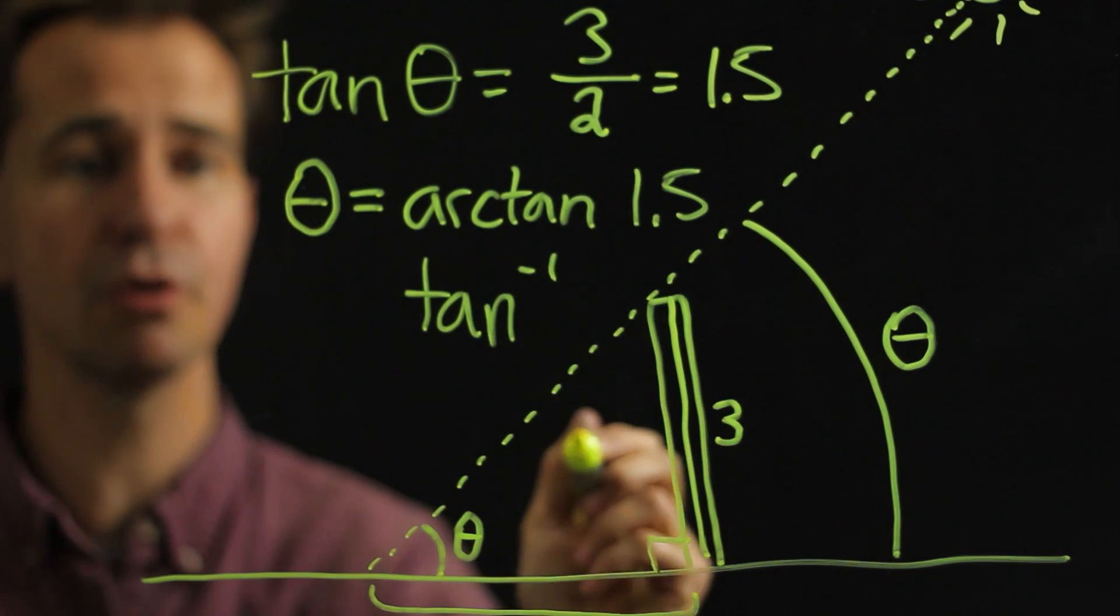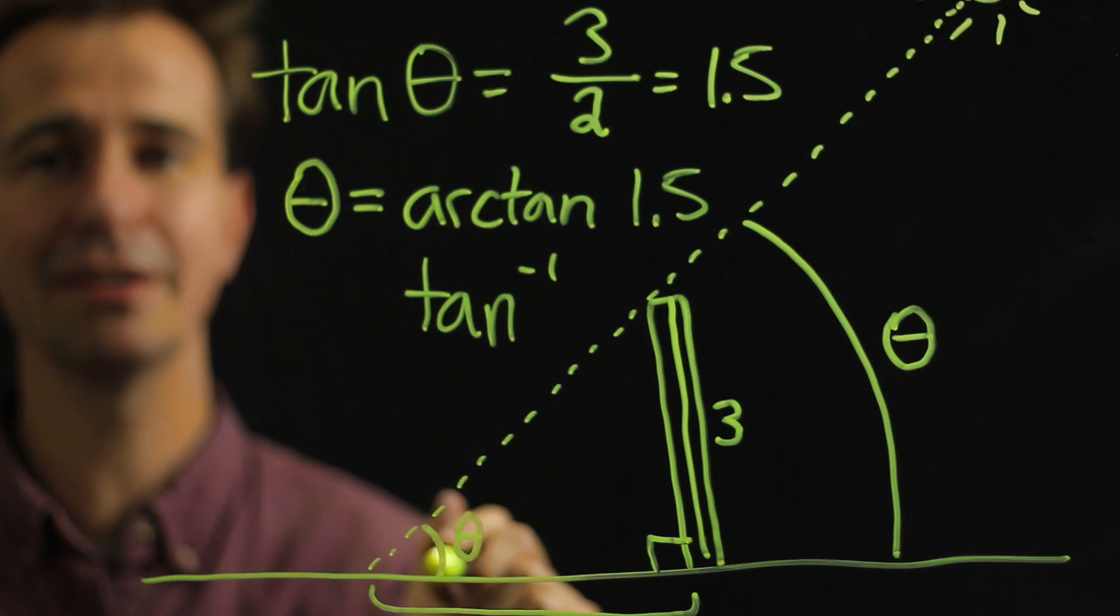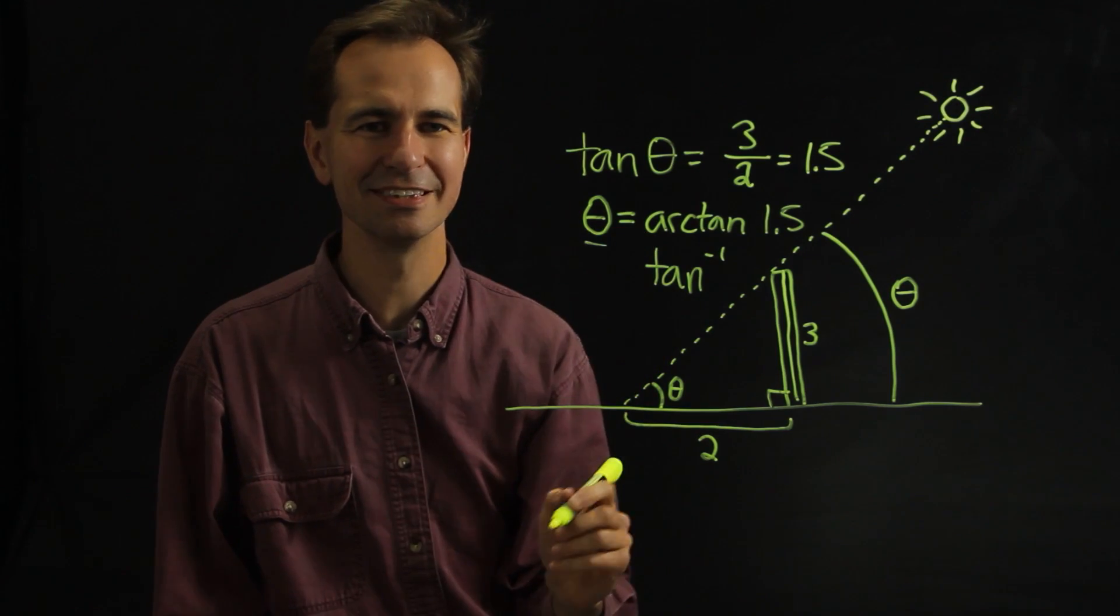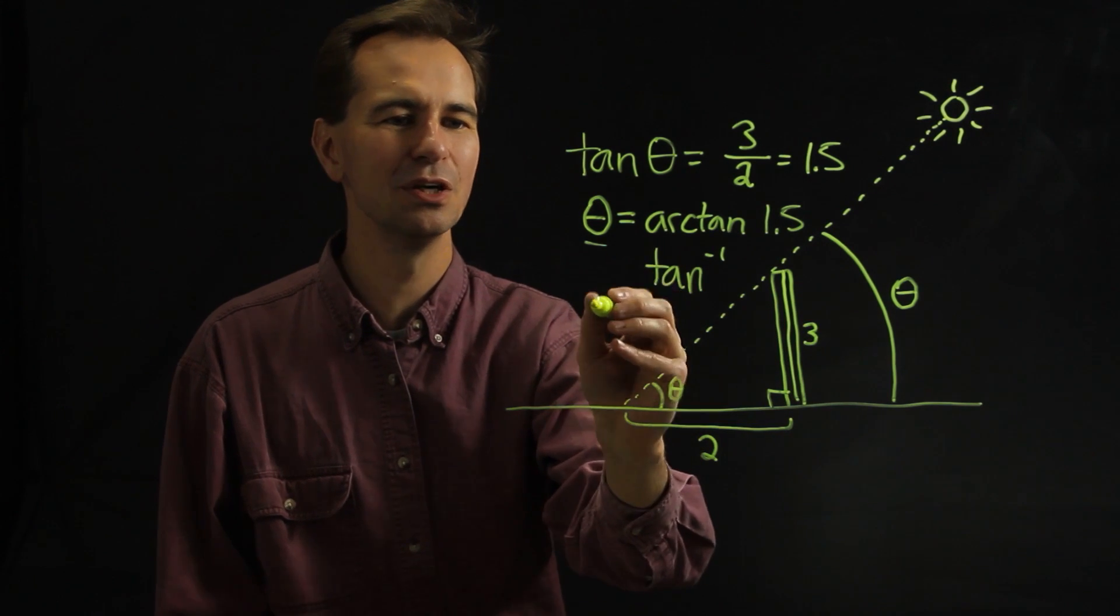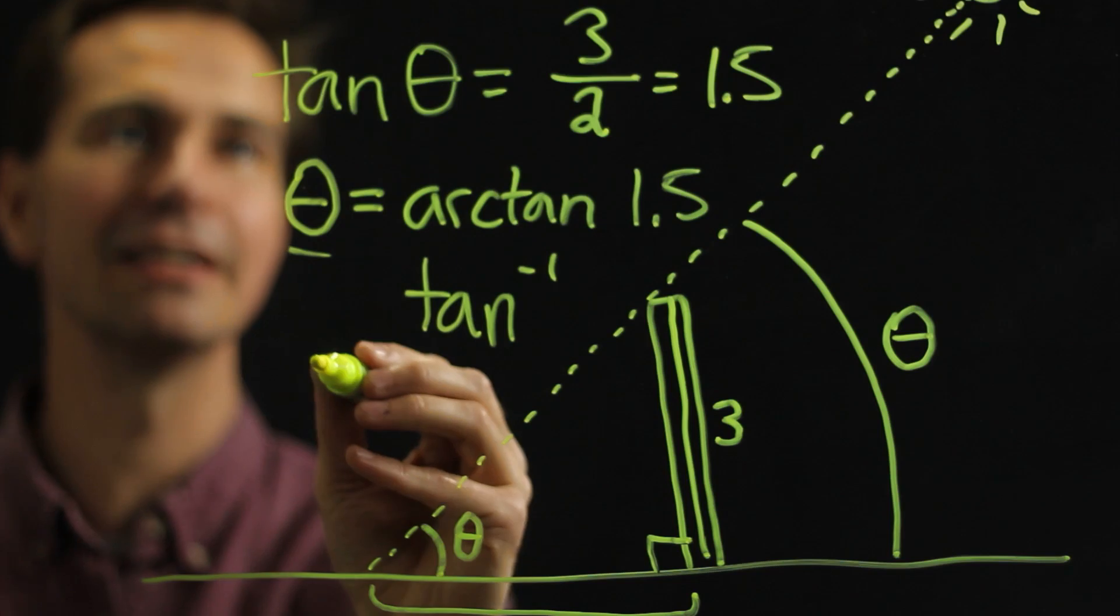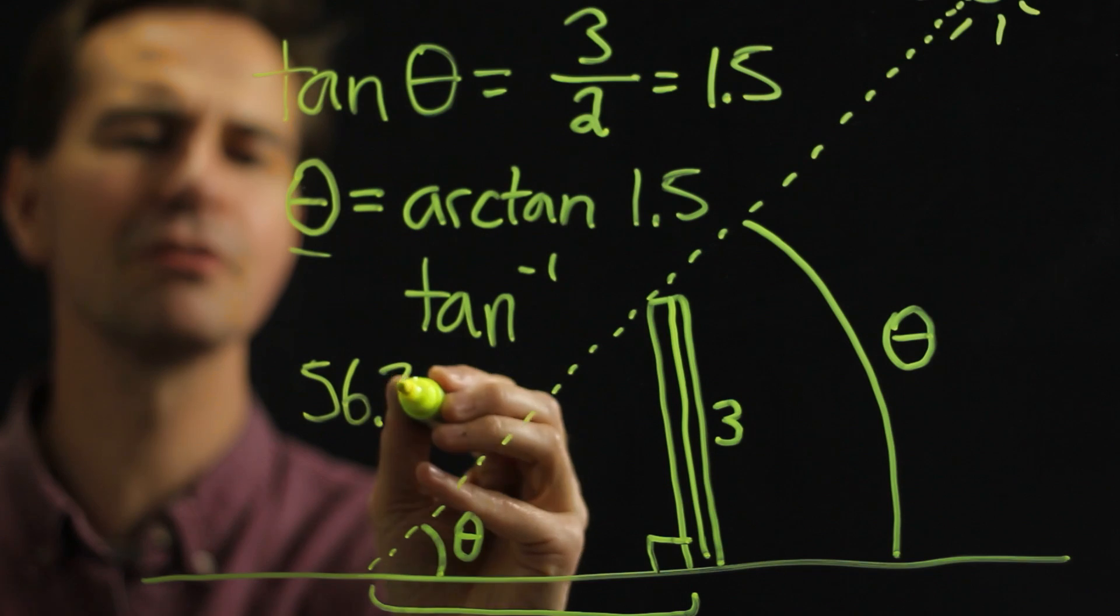So all you do is you type in 1.5 and then you hit that button and it tells you what that angle is. So if we went ahead and did that in this case with the 3 and the 2, we'd find out that that angle is 56.3 degrees.